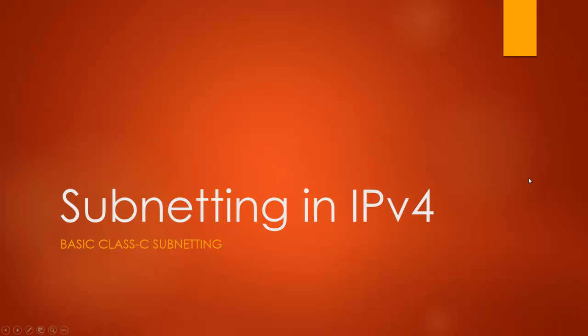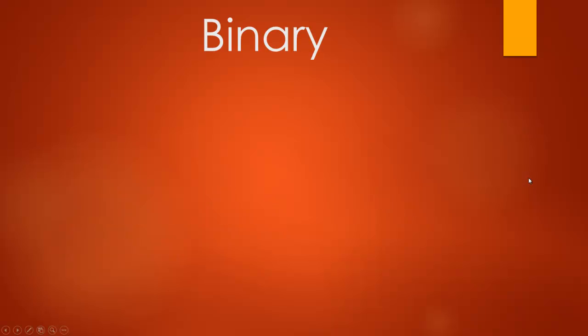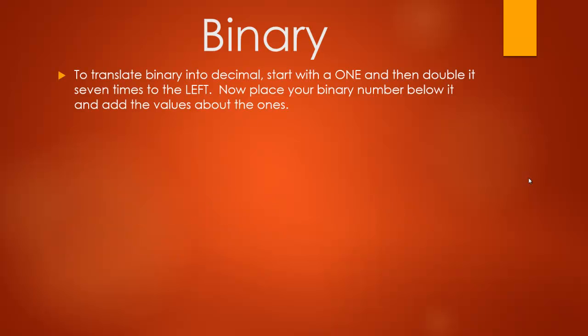Background stuff. Remember binary. With binary, to translate a binary number into a decimal, you start with 1, then double it 7 times to the left, then place your binary number below it, then you add the values above a 1.